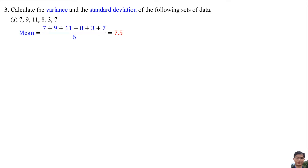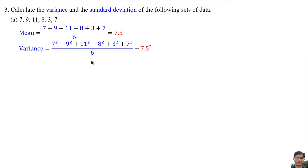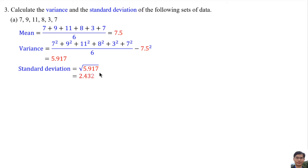The mean is the average of the data, so the mean is 7.5. The variance is calculated by squaring all the numbers, adding them, dividing by the total number of data, then subtracting the mean squared. So the variance is 5.917. The standard deviation is the square root of the variance — square root of 5.917 — which equals 2.432.